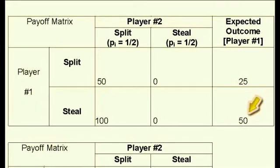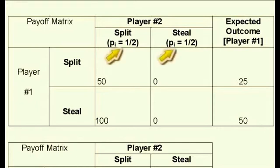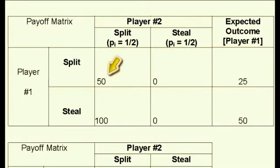Now compare that with the payoff when player number 1 chooses split. Again assuming a 50-50 chance that player number 2 will choose split or steal, the only payout occurs when both player number 2 and player number 1 choose split. The payout under those terms will be 50. So one half of 50 plus one half of 0 is one half of 50, which equals 25.